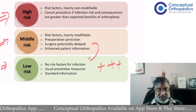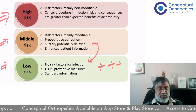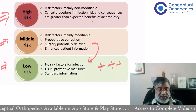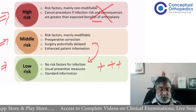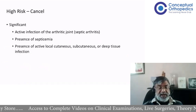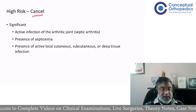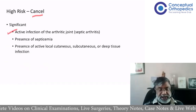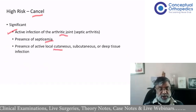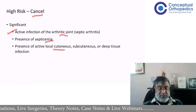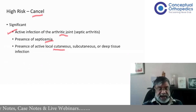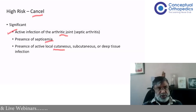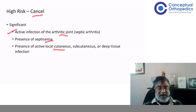We want to operate on low-risk patients. If a patient is middle risk with modifiable factors, we will wait, address those factors, and make them low risk. If they are very high risk and we cannot change that, we will cancel the surgery. High-risk patients in whom you should cancel surgery include those with an active infection — whether in the joint, blood, local tissue, urine, chest, or dental — anywhere in the body. Any active infection should be a criterion to cancel the operation until it is cured.